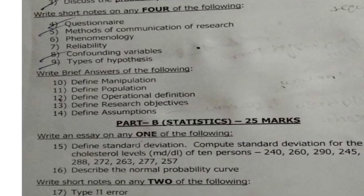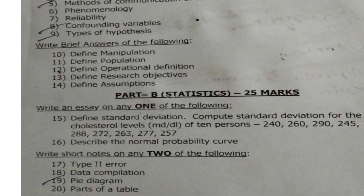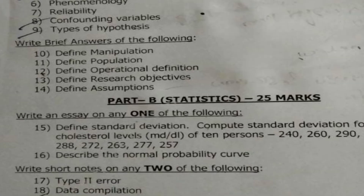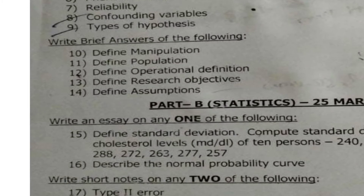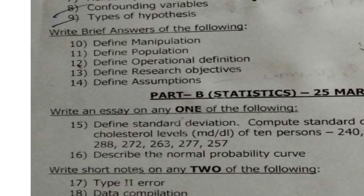The brief answer section gives five questions; answer all five, each carrying two marks — five into two equals ten marks. The questions are: tenth, define manipulation; eleventh, define population; twelfth, define operational definition; thirteenth, define research objectives; fourteenth, define assumptions.